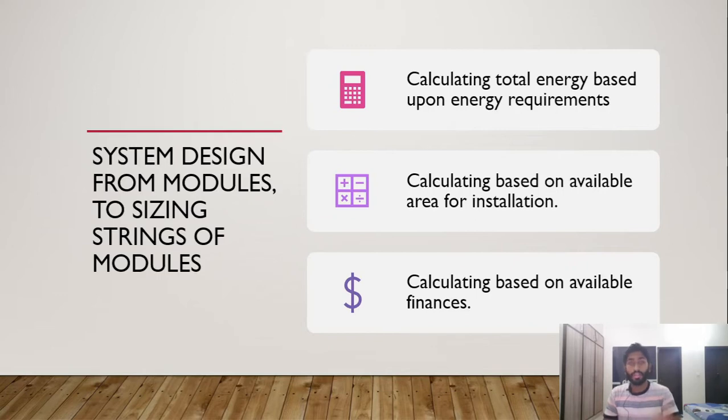Number two is calculating based on available area for installation - again the calculation for the data for the site and location, estimation of losses, and the available area. The last is calculating based on available finances and budget - you have to take into account how much money you're going to spend for labor, installation, system, and balance of system components.